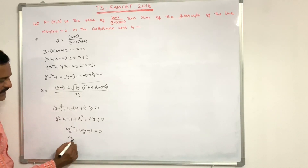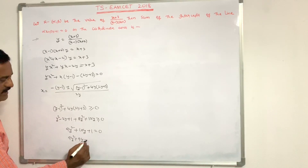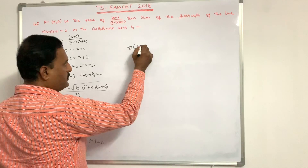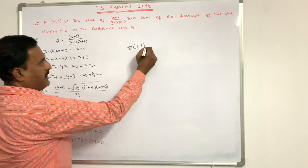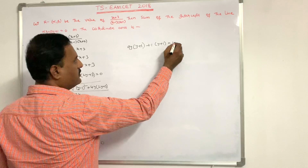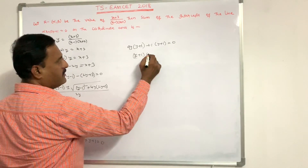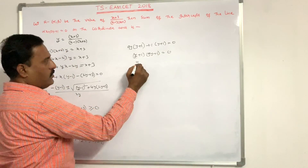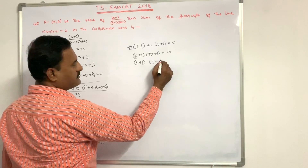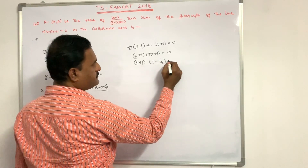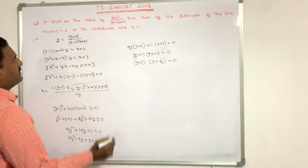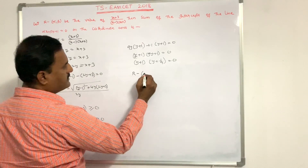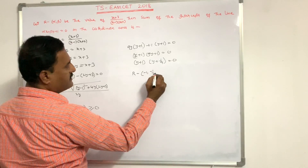Factoring 9y² + 10y + 1 = 0: rewrite as 9y² + 9y + y + 1 = 0. Taking 9y common: 9y(y + 1) + 1(y + 1) = 0, giving (y + 1)(9y + 1) = 0. So (y + 1)(y + 1/9) = 0. Therefore the value of (α, β) is (-1, -1/9).